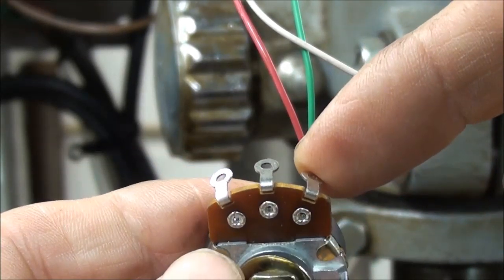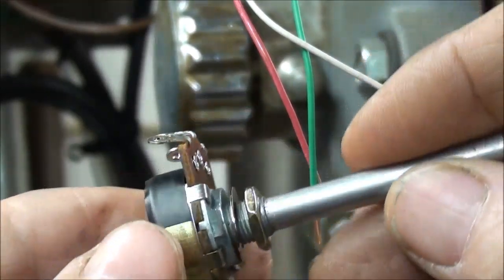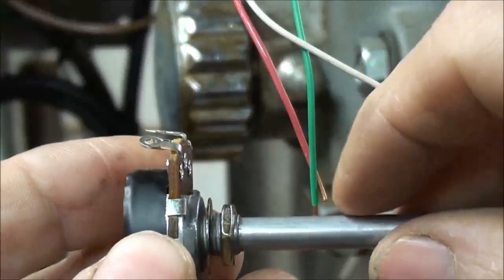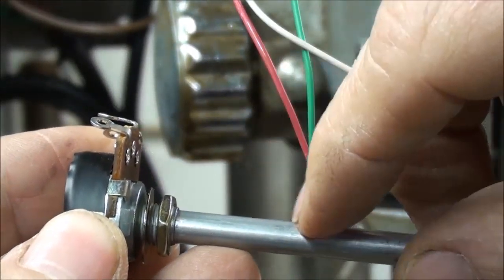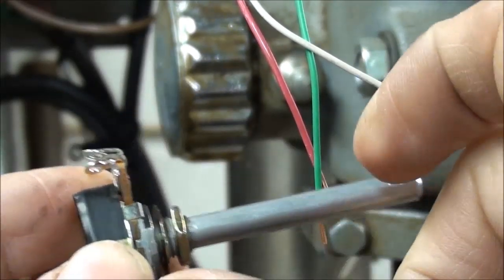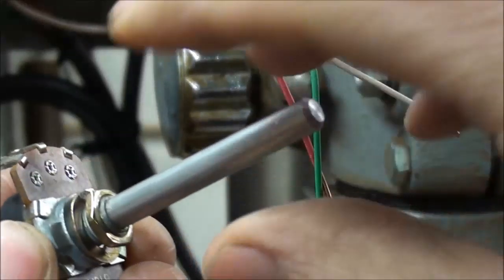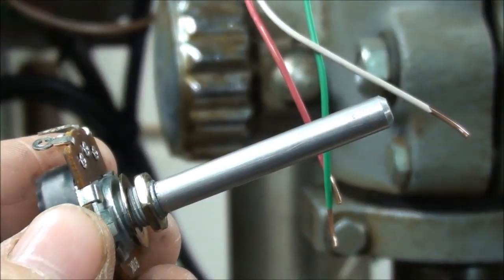And I'll solder those on real quickly. Then I can fasten this onto the box. But the first thing I will do before I do that is determine at what point here I need to saw off the aluminum shank here, so it's the right length. Because that's way too long. I want the actual knob to be close to the lid of that handy box.